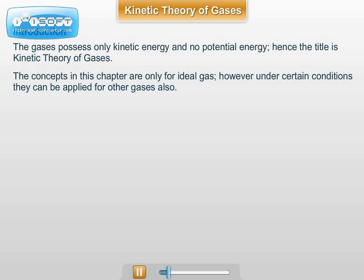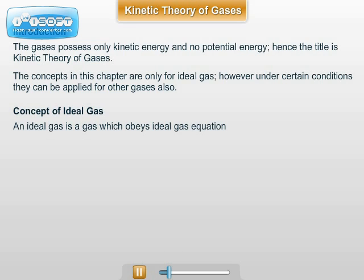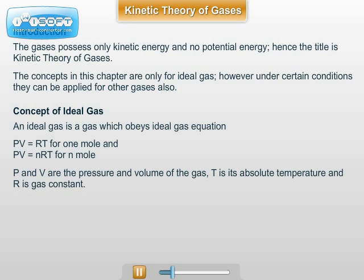Try to understand the concept of ideal gas. An ideal gas is a gas which obeys the ideal gas equation, that is PV equals RT for one mole of gas and PV equals nRT for n moles of gas under all conditions of temperature, pressure, and volume. Thus, a gas obeying this equation will be called a perfect gas or ideal gas.